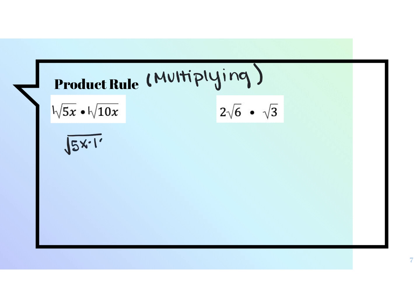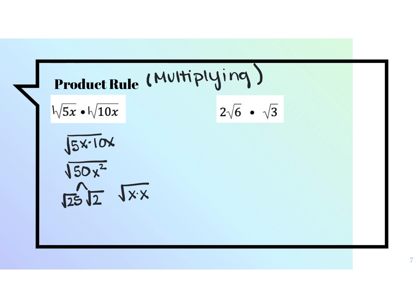So I'm going to do 5x times 10x. 5 times 10 is going to give me 50. x times x is going to give me x squared, because when you multiply you add the powers. Now try to simplify: I'm going to split 50 up — one number from my perfect squares list and one number not. 25 times 2 gets me back up to 50. For x squared, you write it out as x times x, circle your pairs, and pairs come out front as one variable. The square root of 25 gives me 5, I have one x out front, and the square root of 2 I cannot simplify, so I leave it as square root of 2.